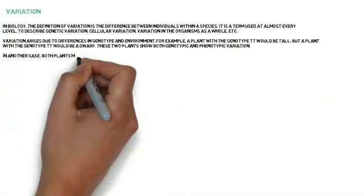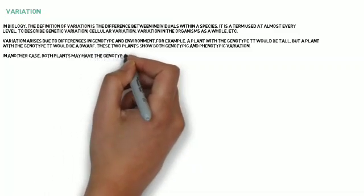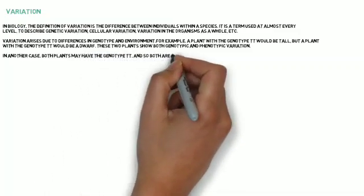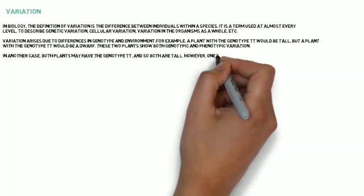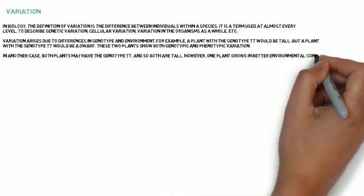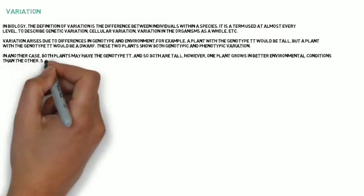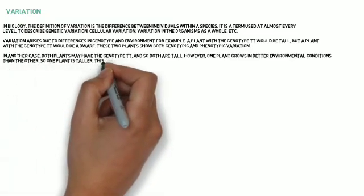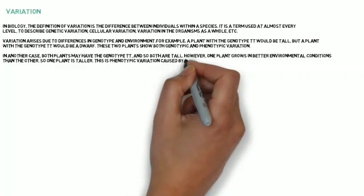In another case, both plants may have the genotype TT, and so both are tall. However, one plant grows in better environmental conditions than the other, so one plant is taller. This is phenotypic variation caused by differences in the environment.